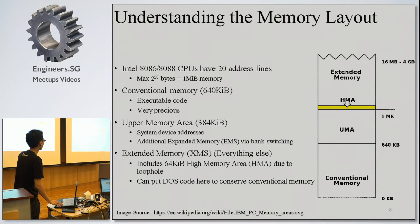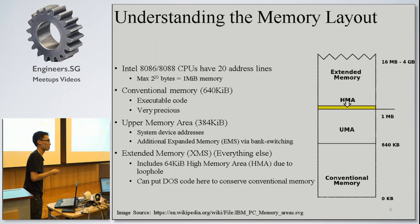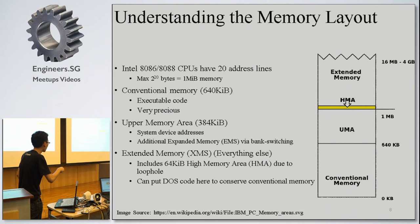About the memory layout — what is conventional and extended memory? In early CPUs they only had 20 address lines, which means they could only address one megabyte of memory. The conventional memory — decided by IBM — is the first 640 KB, where only executable code can reside. The next 384 KB is the upper memory area. Extended memory is everything above that — the RAM we know today, like 16 GB, is classified as extended memory.